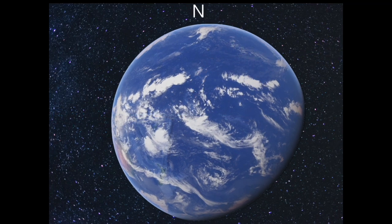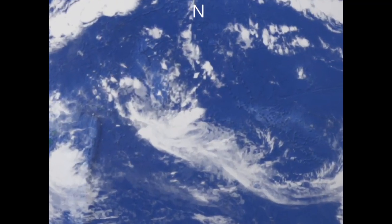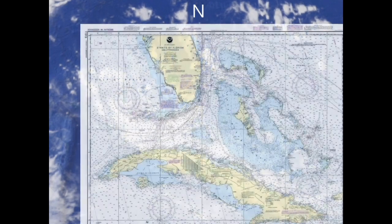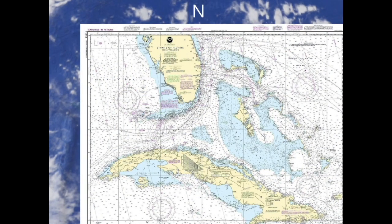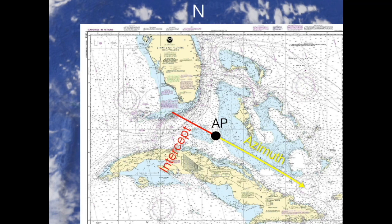On a chart we don't need to draw the picture point of the sun which is so far away. We can use a large scale chart and only mark the assumed position and the intercept. And then we have to draw another line perpendicular to the azimuth. This is our position line. So somewhere along the position line we are.